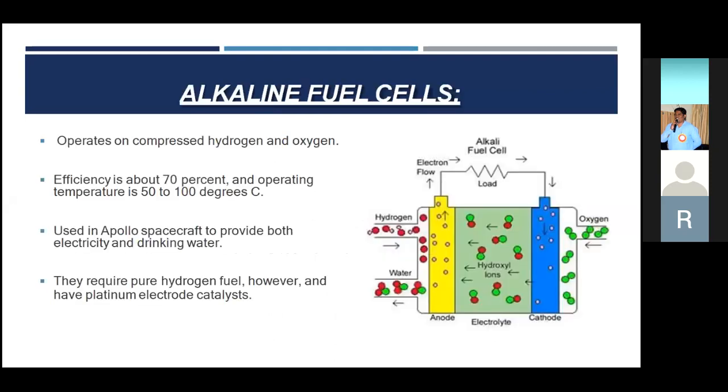Here, the first one is alkaline fuel cell. It operates on compressed hydrogen and oxygen. Its efficiency is about 70%, and operating temperature is between 50 to 100 degrees Celsius. It's mainly used in Apollo spacecraft to provide both electricity and drinking water. They require pure hydrogen fuel, however, and have platinum electrode catalysts.